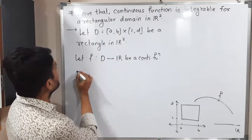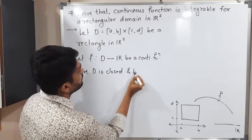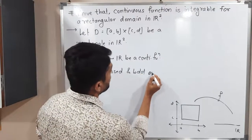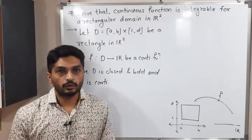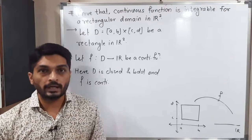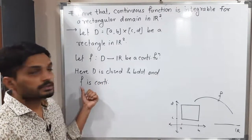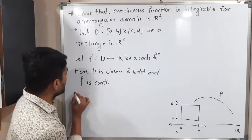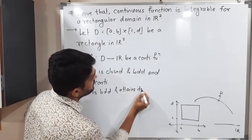Now, D is closed and bounded since it is a rectangle, and F is continuous. We have already seen that if a function is continuous on a closed and bounded domain then that function is also bounded and attains its bounds. So therefore F is bounded and attains its bounds.